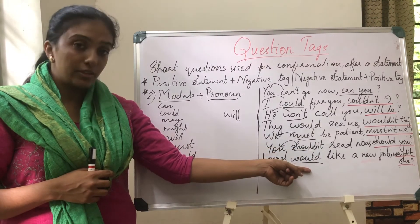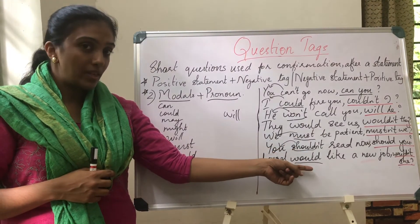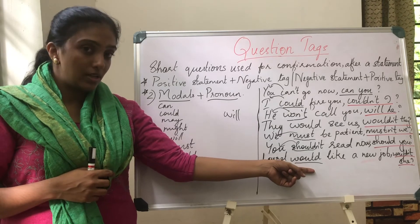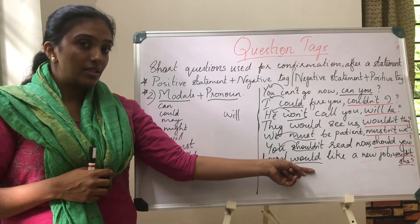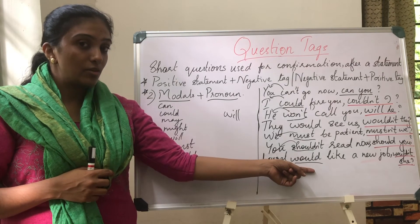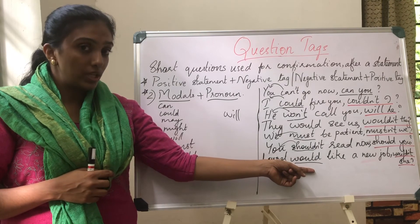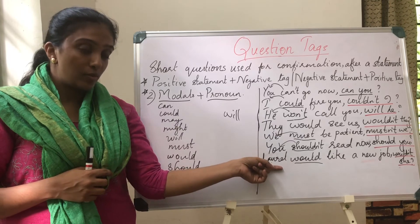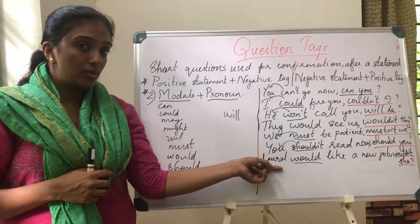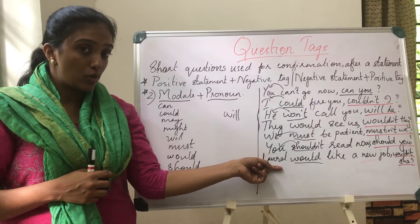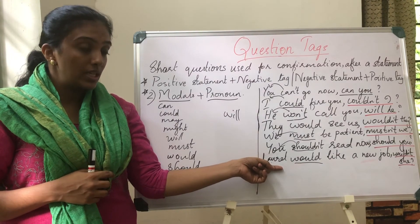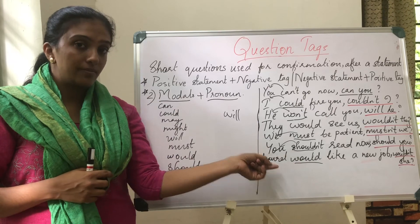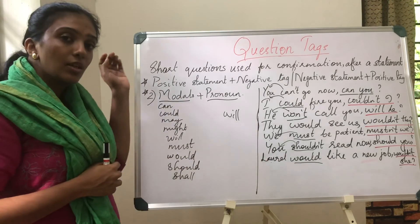'Lorraine would like a new job.' Would is the modal — changing it into the negative: wouldn't. Lorraine is a proper noun, so we take the pronoun 'she'. The tag becomes: wouldn't she.